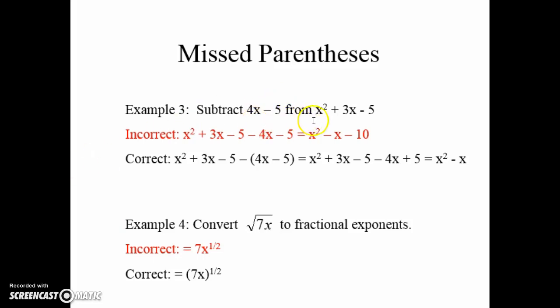Subtract 4x minus 5 from x squared plus 3x minus 5. Well if you're subtracting this from that you're going to have to distribute that negative value and dropping parentheses is a big way of making sure that you're going to make that error. So again I'm going to say over and over, parentheses are your friend. If you're told to do some sort of mathematical operation on an entire expression make sure you're doing the operation on the entire expression not just the variable that it's next to.